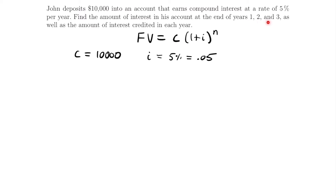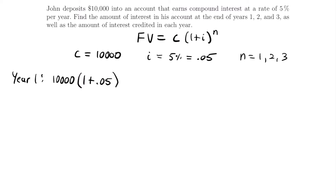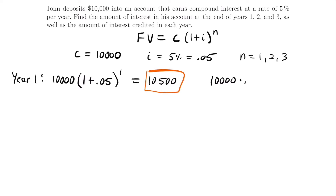We've got three different amounts of years: one, two, and three. So we'll start with year one. We have $10,000 multiplied by one plus 0.05, which is our interest rate, to the first power because it's just one year. Plugging that into our calculator — 10,000 times 1.05 — the amount in our account at the end of year one is $10,500. We started with $10,000 and now have $10,500, so the amount of interest generated was $500. You can also just multiply 10,000 times the interest rate to find that $500 is how much interest accumulated during year one.